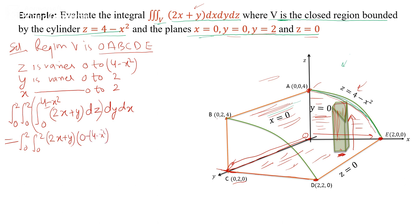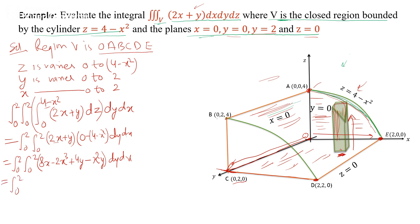Expanding (2x+y)(4-x²) gives 8x - 2x³ + 4y - x²y. So the integral becomes the double integral from 0 to 2, 0 to 2 of (8x - 2x³ + 4y - x²y) dy dx. Now take the integration with respect to y: integrating gives 8xy - 2x³y + 2y² - (x²y²)/2, applying the limit from 0 to 2.